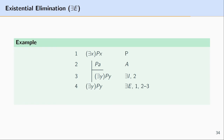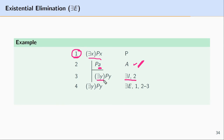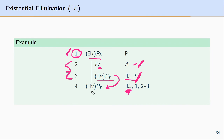In this first example, we begin with an existentially quantified expression at line 1, ∃xPx. We make an assumption based upon this, replacing the existentially quantified variable with name A — and since there's only one, we pick A. This name A is not found in any active part of the proof. At line 3, we use existential introduction to reason to ∃y Py. Then at line 4, we use existential elimination relying on line 1 and the sub-proof at lines 2 through 3. This is an acceptable use because we didn't violate the restriction that the assumed name cannot be found in the formula being discharged.